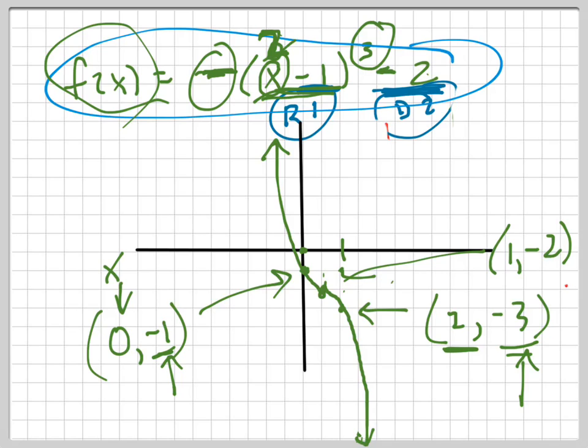I would always check with a couple points on your graph to make sure that you did it right. Now, also, another point would have been, if I go 2 over, because it's a cubic, I would have gone 8 down. So, the point right there would be, 2 over would be 3 comma, and then I'm going 8 down from negative 2. It'd be 3 comma negative 10. That'd be another point.